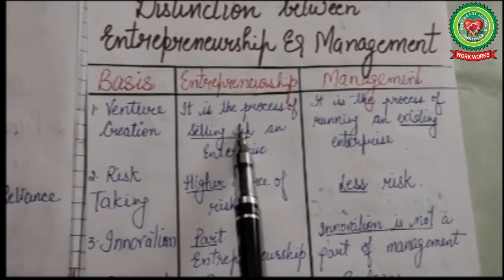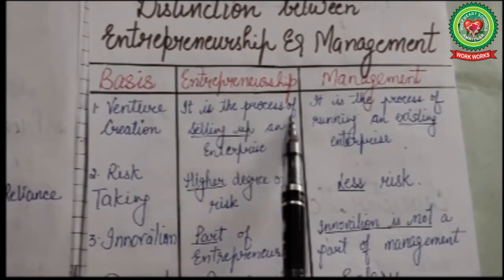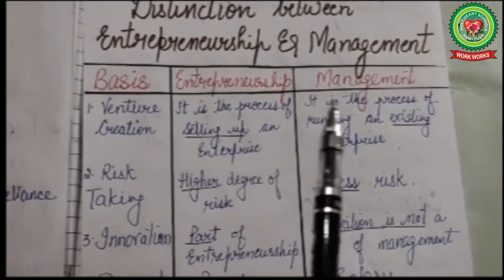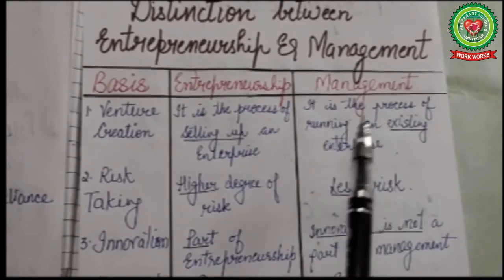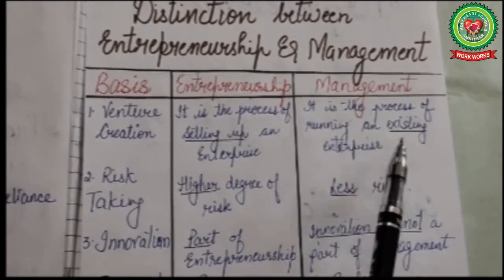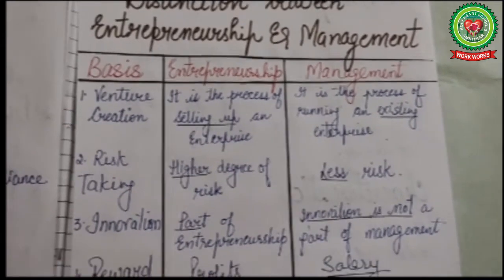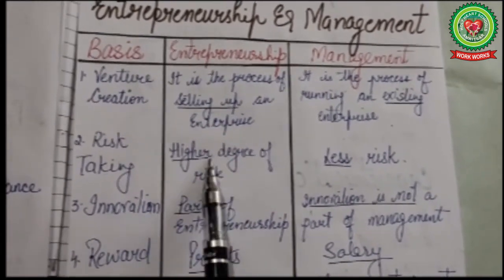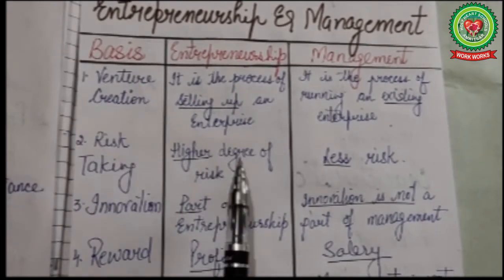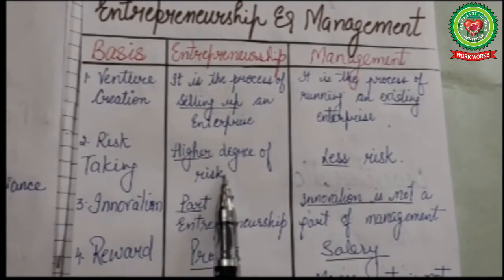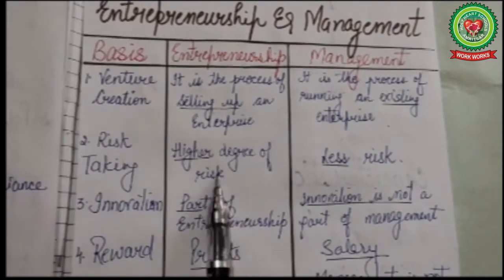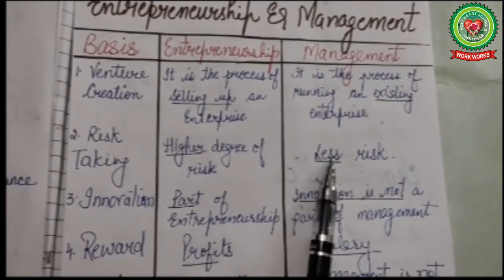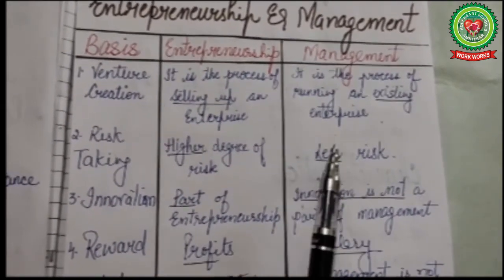Next topic is the distinction between entrepreneurship and management. First is venture creation — in entrepreneurship it is the process of setting up an enterprise, but in management it is the process of running an existing enterprise. Second is risk taking — entrepreneurship involves a high degree of risk as the entrepreneur is self-employed, but management involves less risk as the manager is employed.